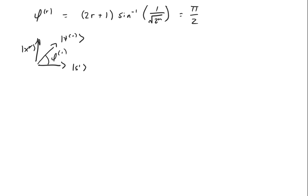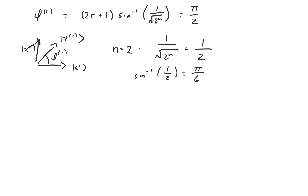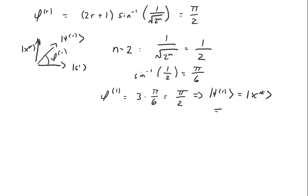You may have noticed something interesting happens if we're using two qubits, that is if n equals 2. In this case, the argument to the inverse sine is the square root of 1 over 4, or 1 half, and the inverse sine of 1 half is pi over 6. So if we apply the subroutine a single time — that is if r equals 1 — then phi of r is equal to 3 times pi over 6, or pi over 2, which means the state we're in after one application of the subroutine is the special state x star. So if we make a measurement of the system after applying the subroutine a single time, we're guaranteed to find the system to be in the state x star.